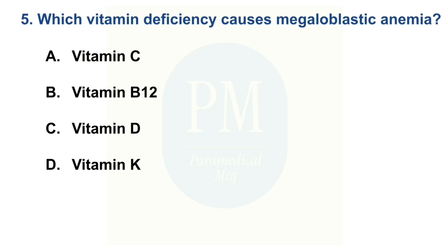Which vitamin deficiency causes megaloblastic anemia? Option A: Vitamin C. Option B: Vitamin B12. Option C: Vitamin D. Option D: Vitamin K. The correct option is Option B — Vitamin B12.